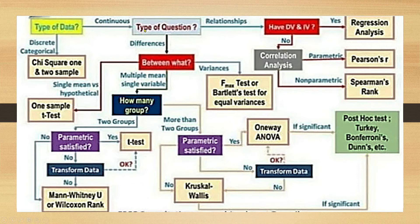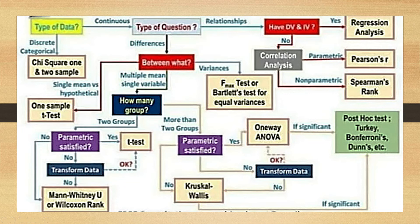For quantitative data, we are asked two types of questions or purposes: differences and relationships. Under differences, we have three choices: single sample mean, multiple sample mean, and a test to compare variances. For a single mean, we have the parametric one-sample t-test for unknown variance. If non-parametric, we can use the Wilcoxon signed-rank test or sign test to compare medians.